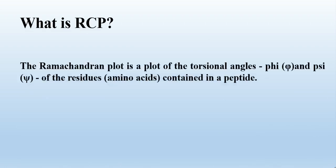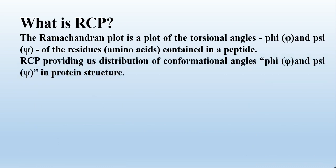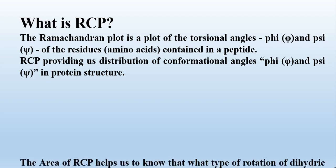So what is the Ramachandran plot? The Ramachandran plot is a plot of torsional angles — that is phi and psi — of the residues, that is amino acids, contained in a peptide or protein. The Ramachandran plot provides us the distribution of conformational angles phi and psi in protein structure.